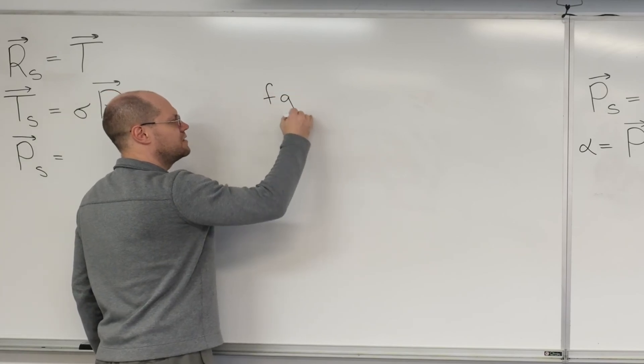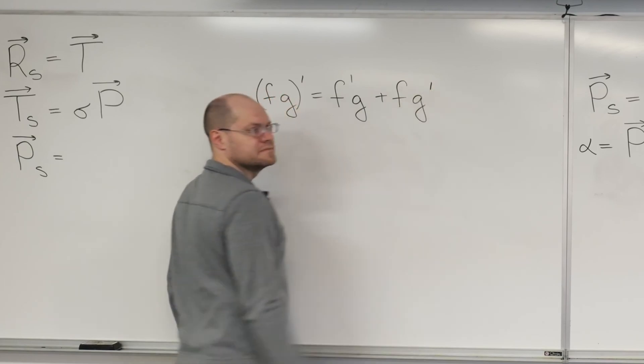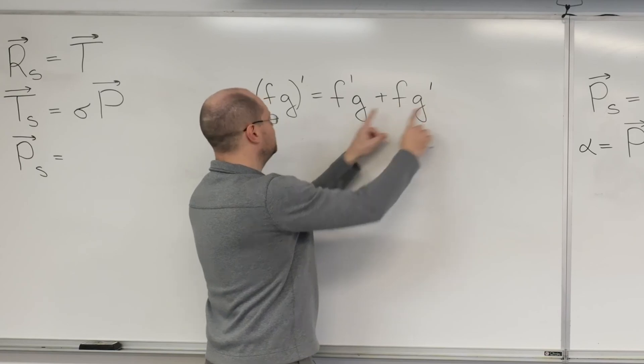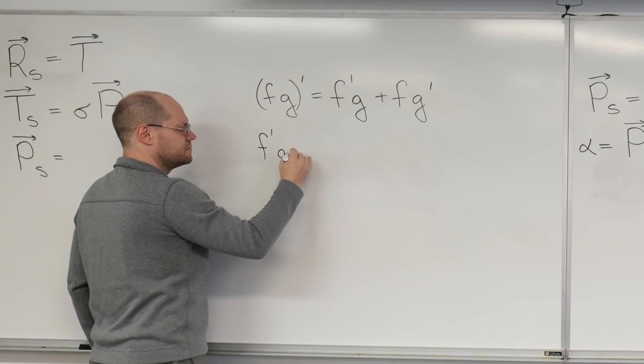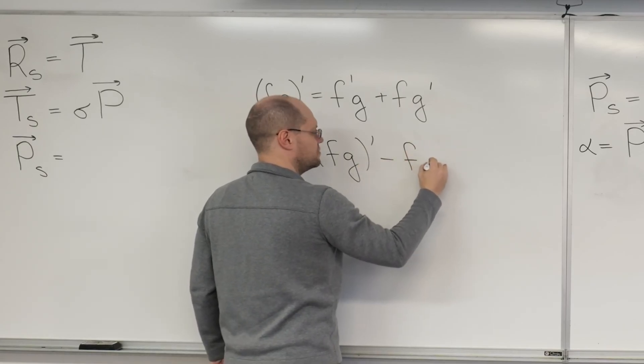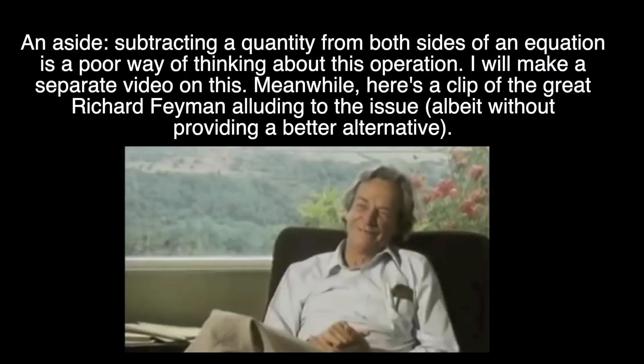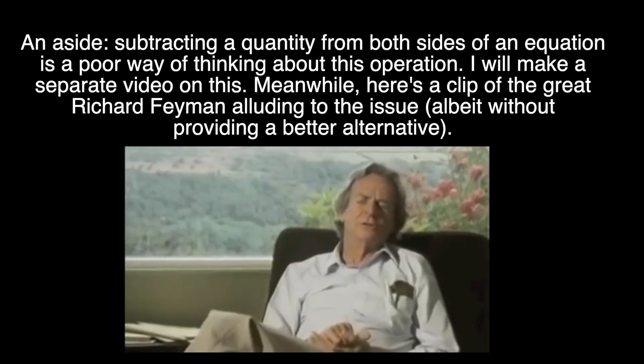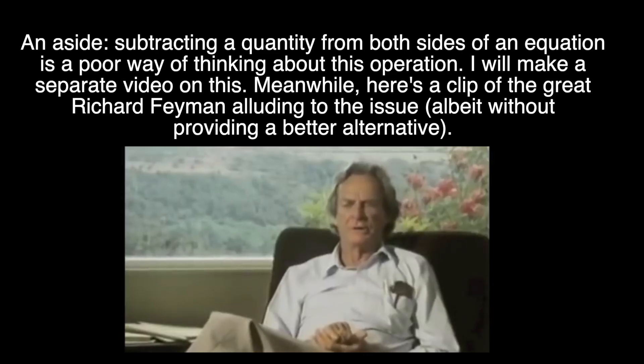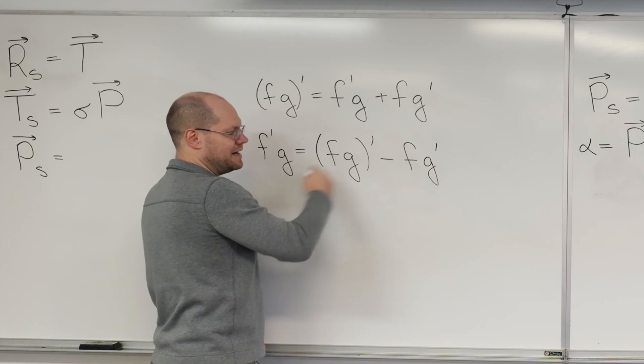The product rule reads that the derivative of FG is the derivative of F times G plus F times the derivative of G. But what I can do is subtract FG prime from both sides and I'll discover that F prime G is FG prime minus FG prime. FG quantity prime minus FG prime.